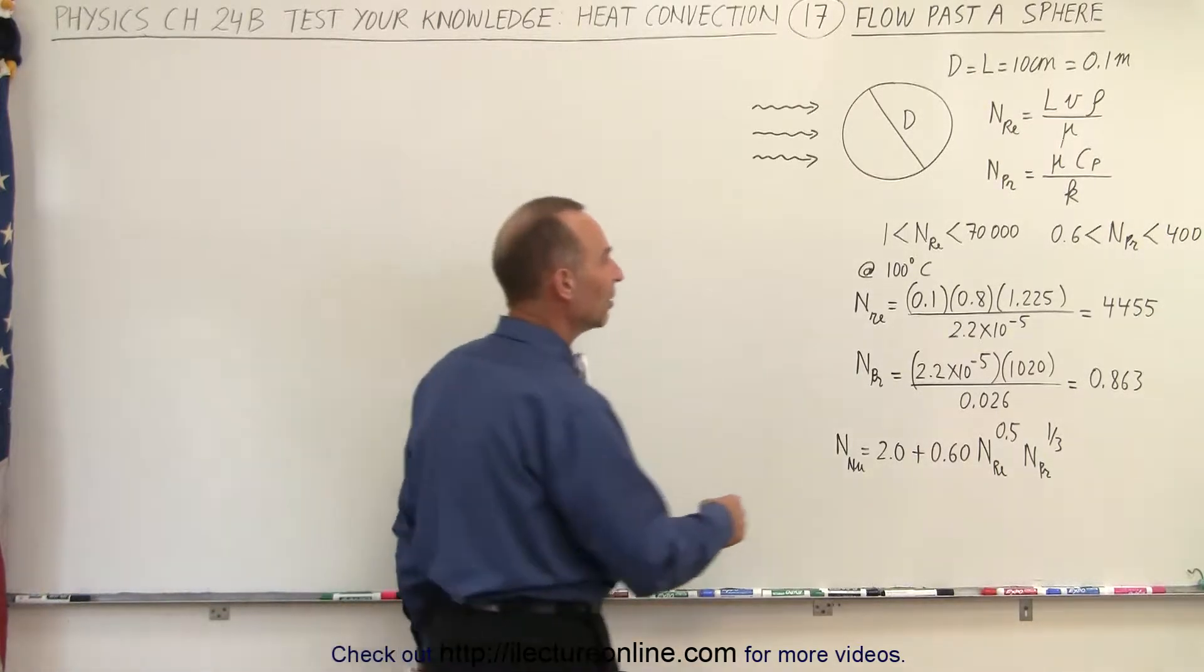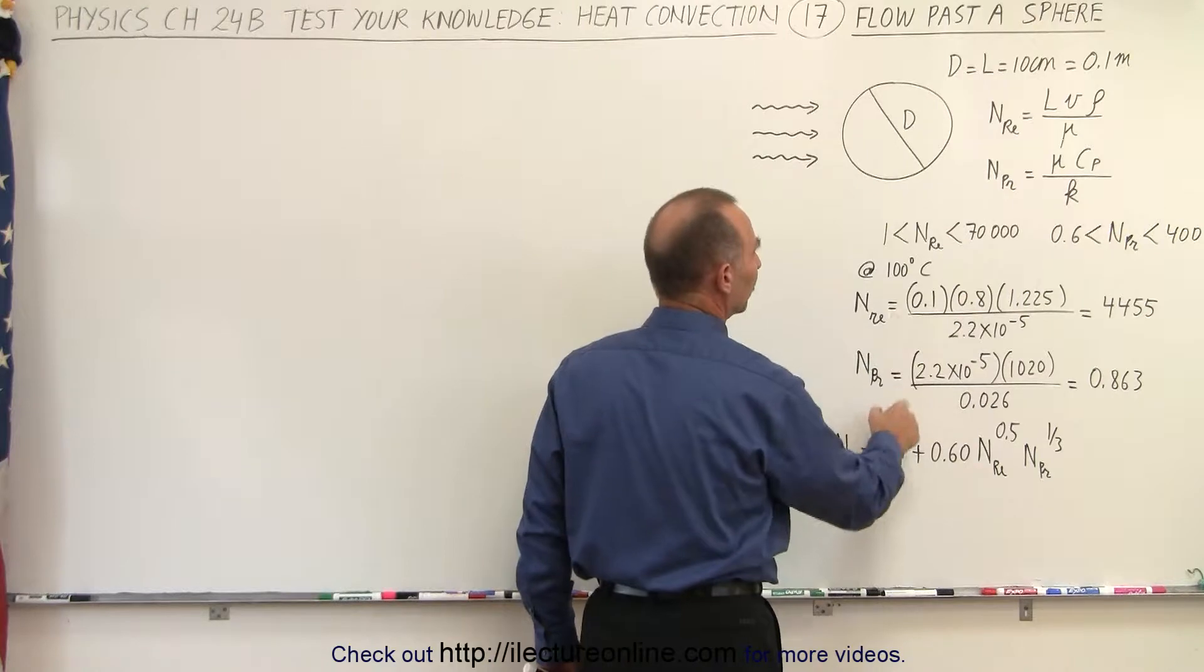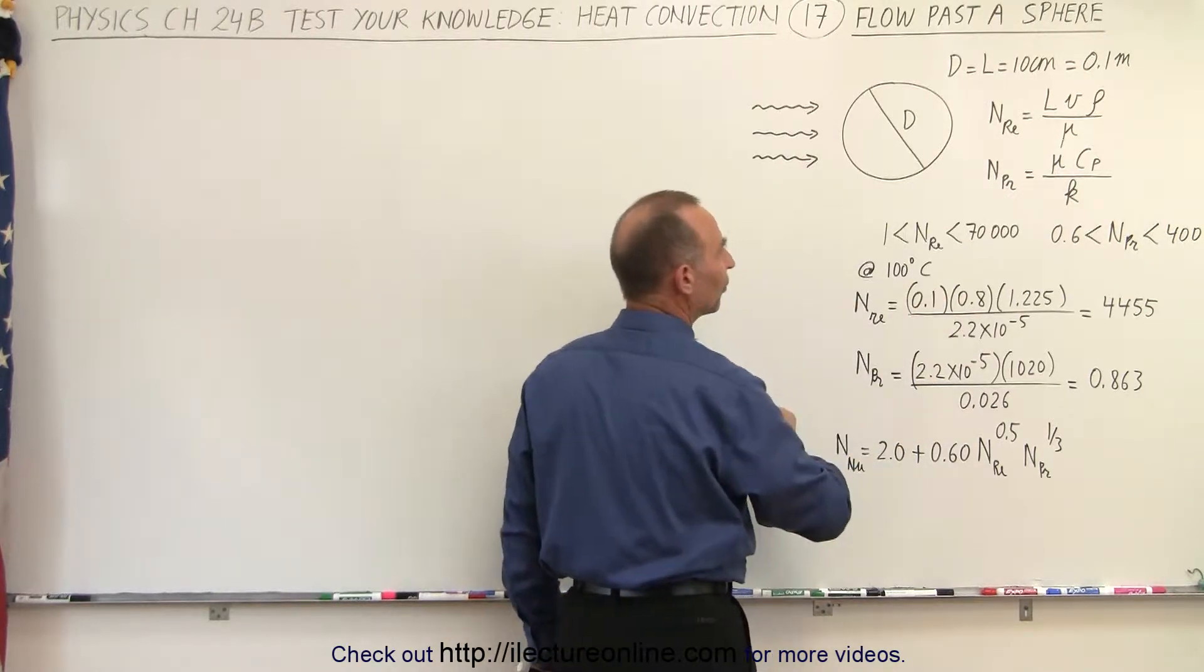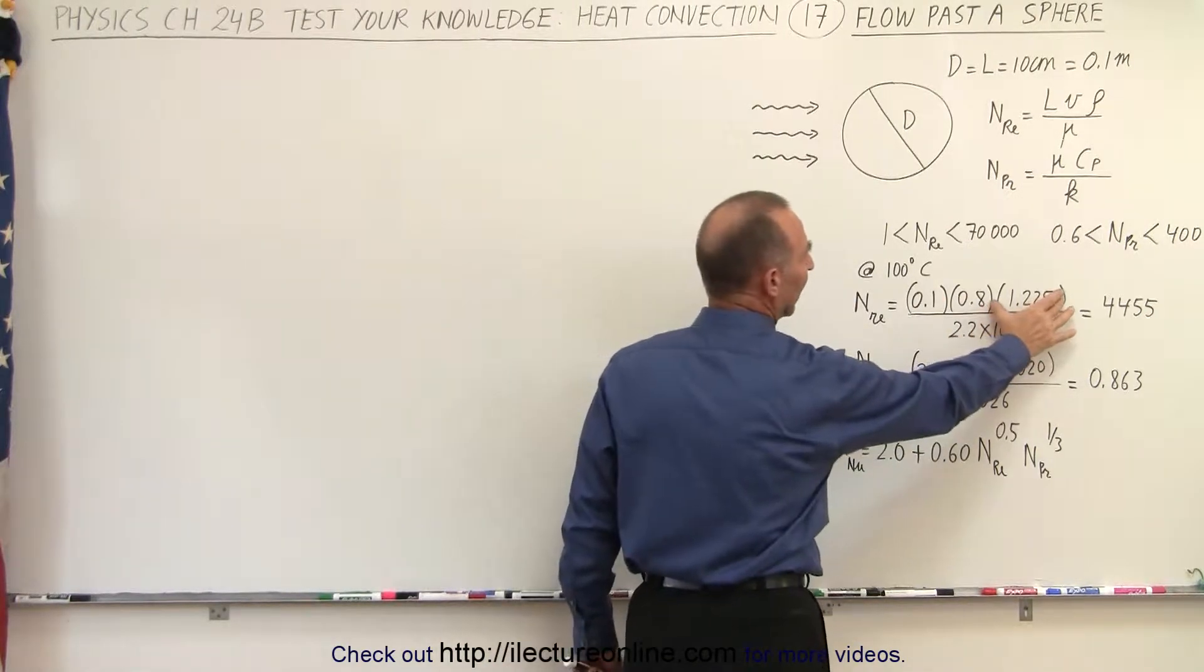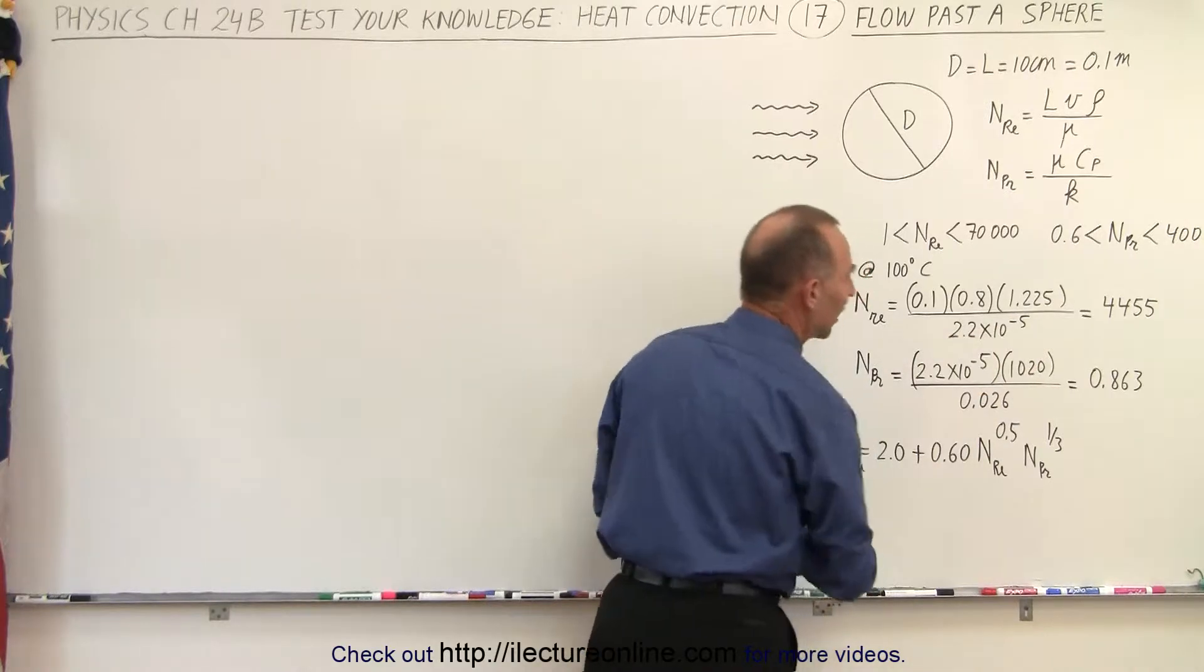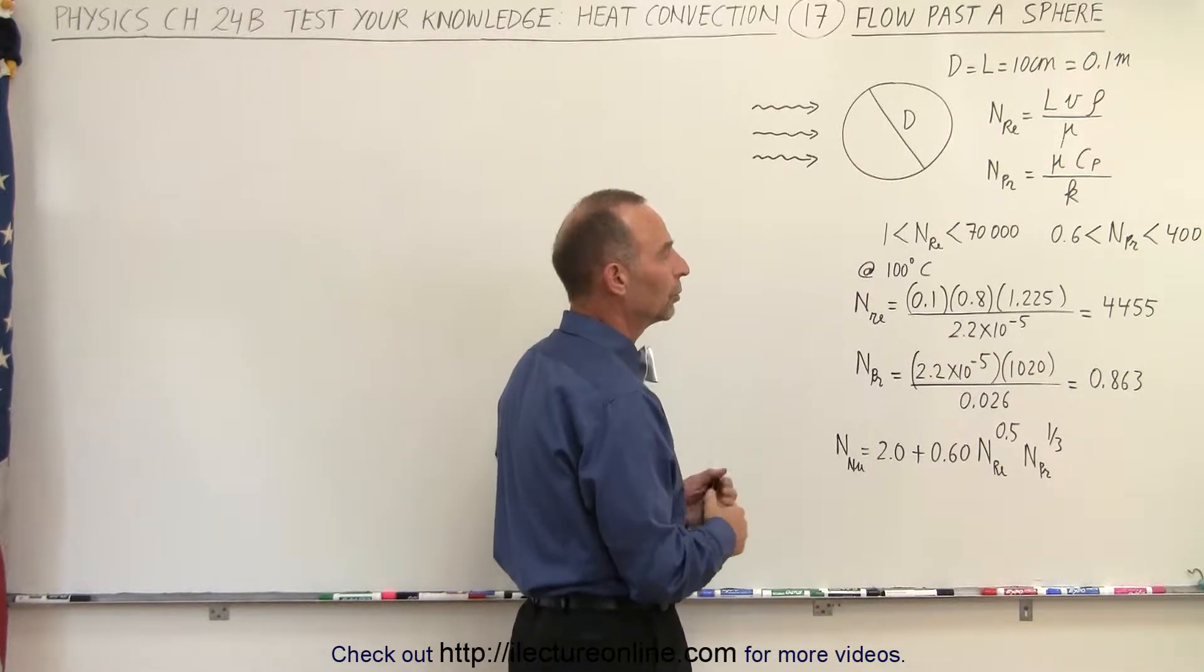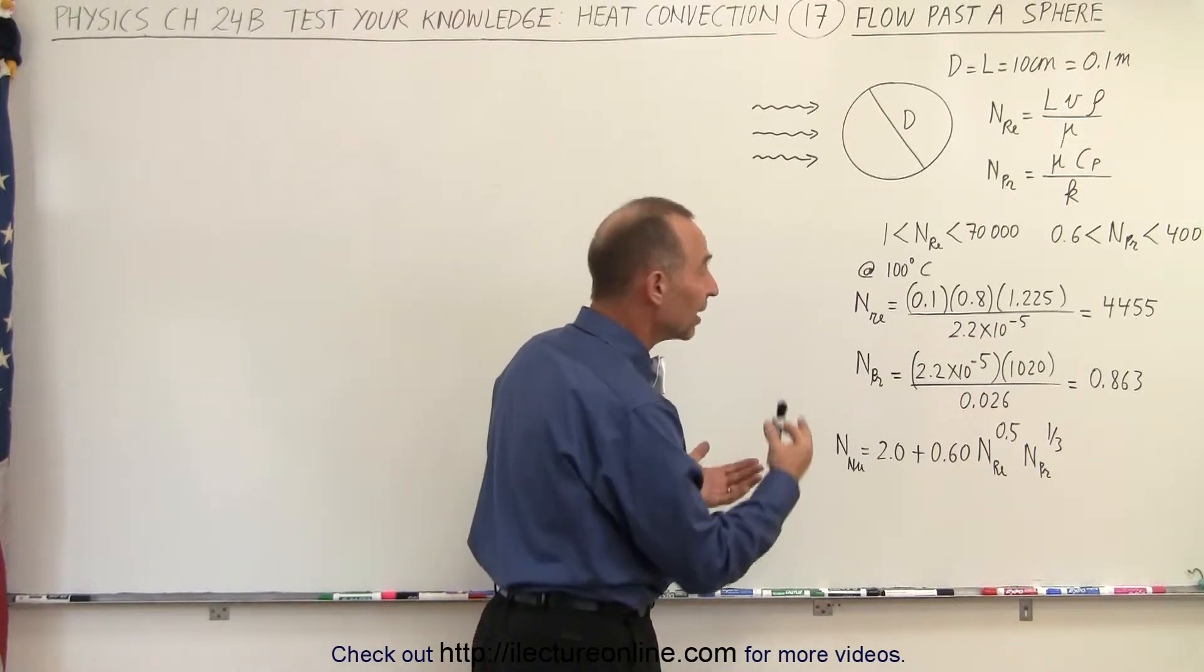Now we've taken the velocity of the airflow at 0.8 meters per second. Here we have the diameter of the sphere. Here we have the air density and the viscosity of the air.